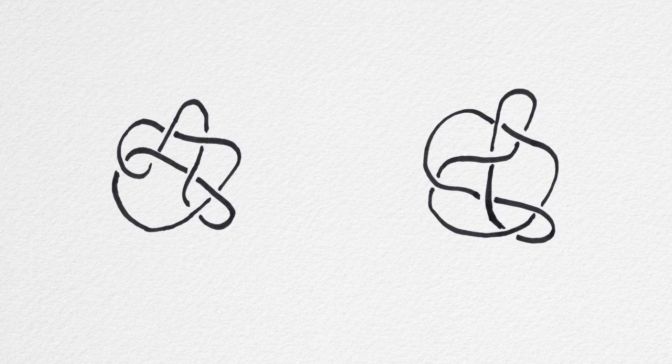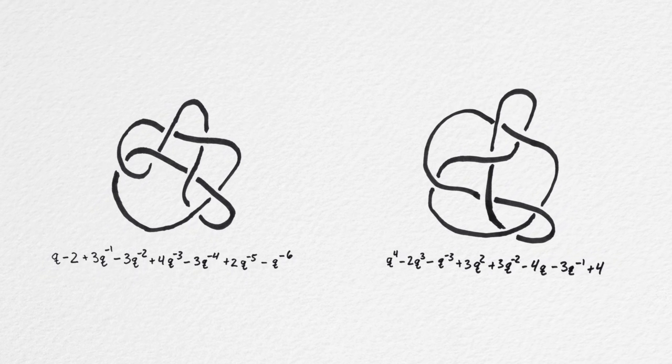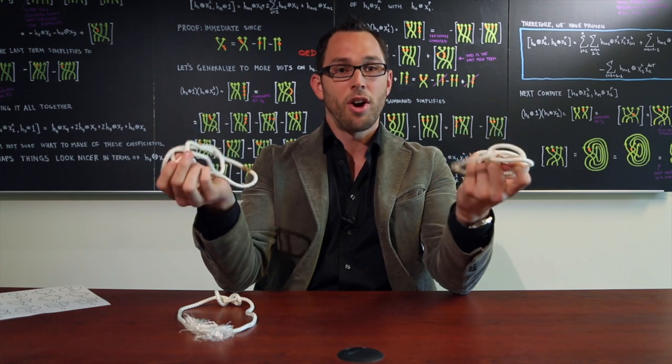Now this knot and this knot are both going to have their own polynomials, and if those polynomials are not equal, these knots aren't the same.